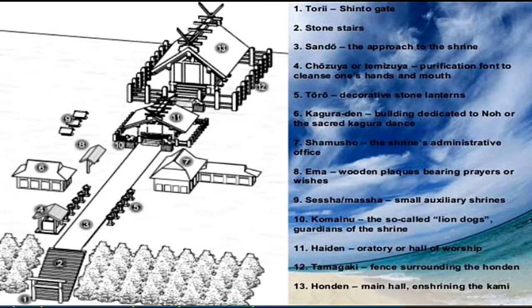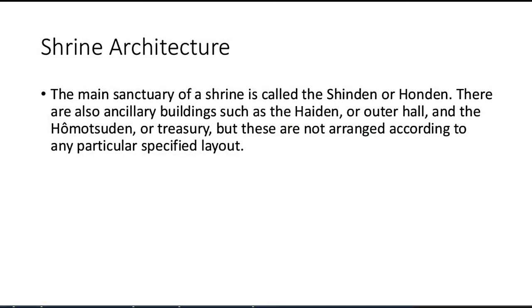Some definitions of Japanese shrine architecture: the main sanctuary of a shrine is called the Shinden or Honden. There are also ancillary buildings such as the Haiden or outer hall, and the Homotsuden or treasury, but these are not arranged according to a particular specified layout.